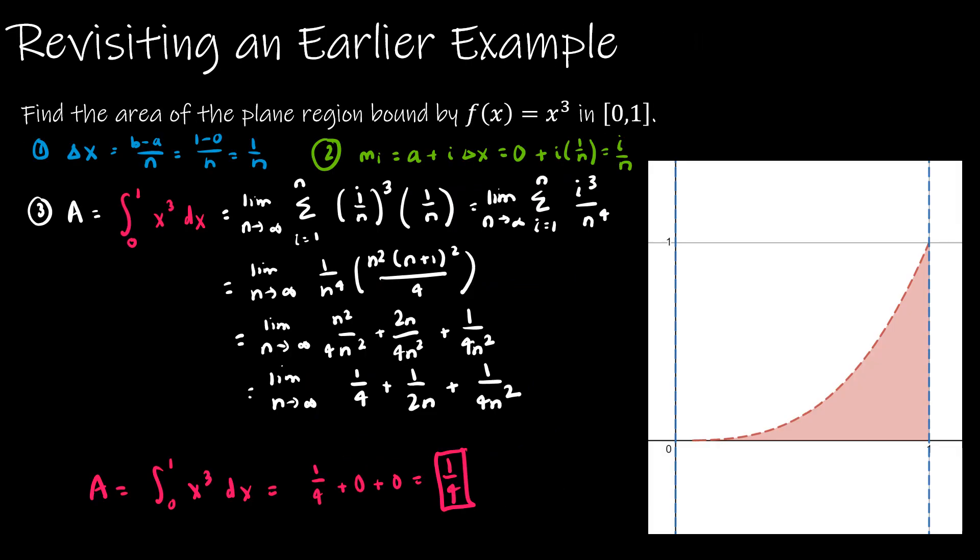So I'm revisiting an earlier example. In our last videos, we took a look at finding the area of the plane region bound by f(x) equals x cubed on the interval from 0 to 1. So really what I did is I just recopied the information from that video onto this slide, and the only thing that I changed is that the area can also be written as the definite integral from 0 to 1 of x cubed dx. So all of this work for now is the same until we learn some new tricks in the next section. But for now, we have all of that work the same, and again we can say the area is equal to the definite integral from 0 to 1 of x cubed dx, and because we're finding the limit, we found 1 fourth plus 0 plus 0, which is 1 fourth.